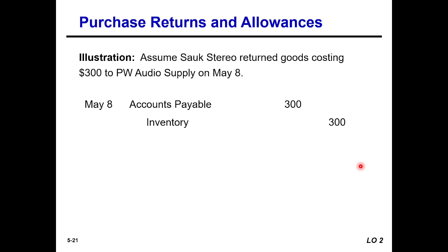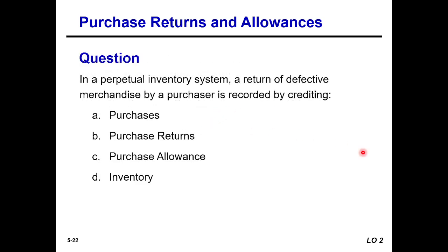Returns and allowances example: assume Sauk Stereo returns goods costing $300 to PW Audio Supply on May 8. The journal entry is: Accounts Payable debit and Inventory credit for $300. When we originally bought the goods, it was Inventory debit and Accounts Payable credit. When we return the goods, the entry is the reverse.